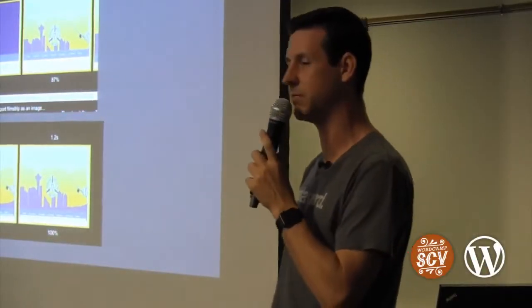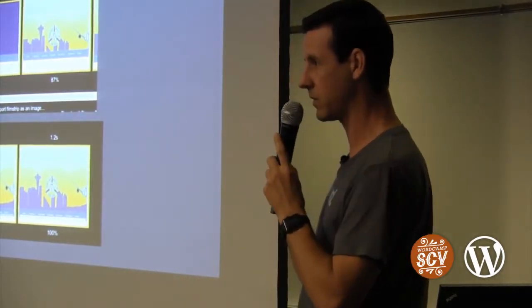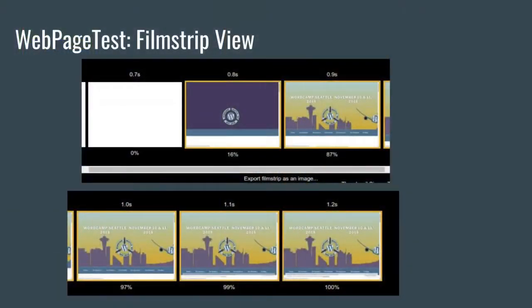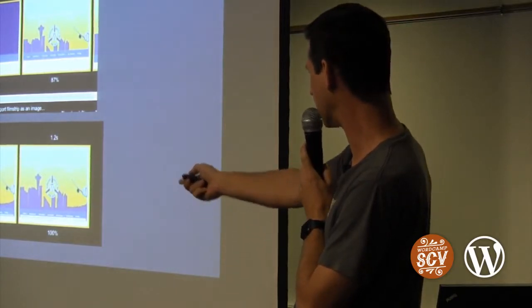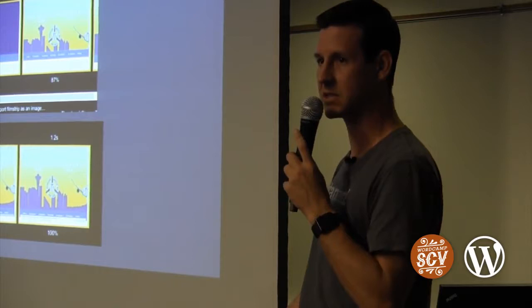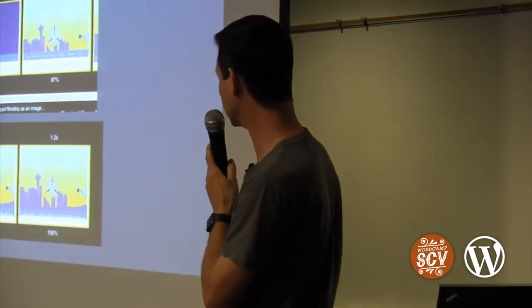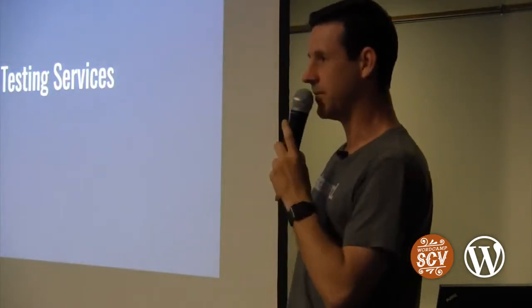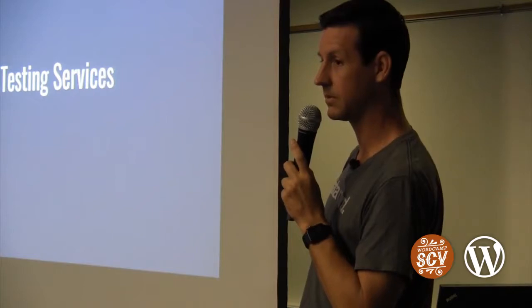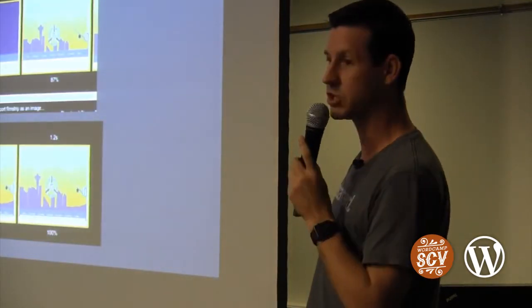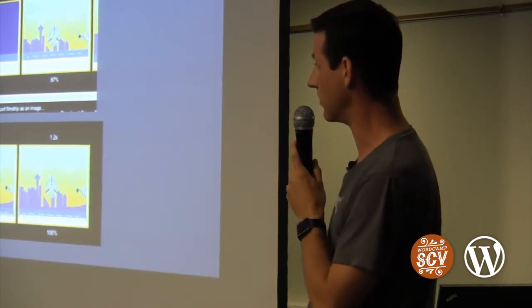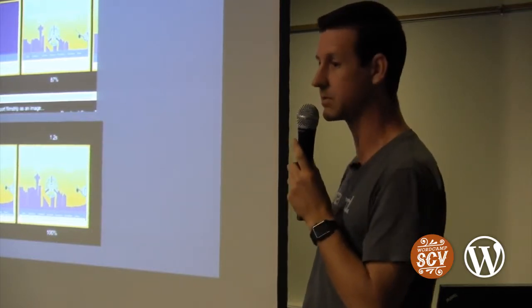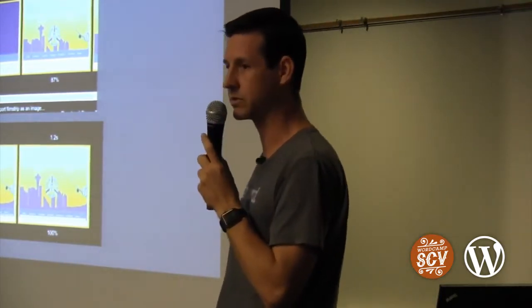One of my favorite pieces is the film strip view. After you run a test, you can see over time what people are seeing in their browser. In this example, someone's staring at a blank screen for the first 0.7 seconds, then the background comes in, then the image, navigation renders, a few more things, and finally the cookie bar. You can see how long it actually takes for the page to show up to someone visiting the site. WebPageTest also has options for mobile devices and controlling network speed.